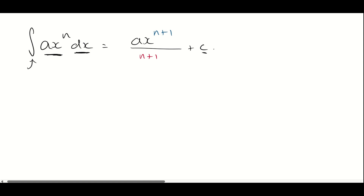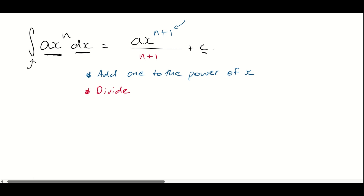If we remind ourselves why we end up with N plus 1, we came up with these rules. In blue, that's referring to this N plus 1 here — we have to add 1 to the power of X. That was our first step. And then in red, we had to divide by the new power. So to anti-differentiate a function of the form AX to the power of N, we add 1 to the power of X and then divide by the new power.